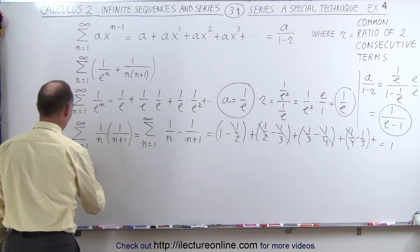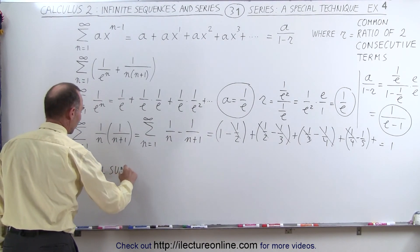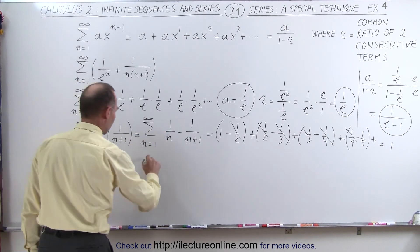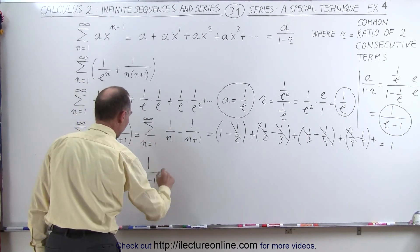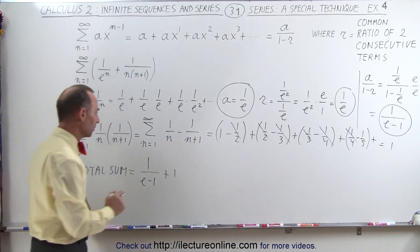Now all we have to do is add those two together, so the total sum of the two parts will be equal to 1 divided by e minus 1 plus 1. And of course, we have to find the common denominator.